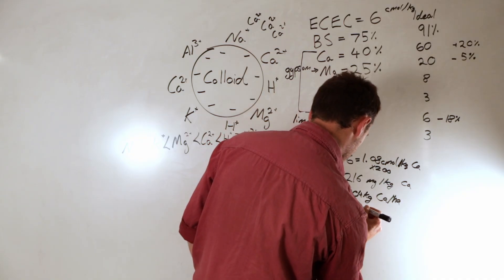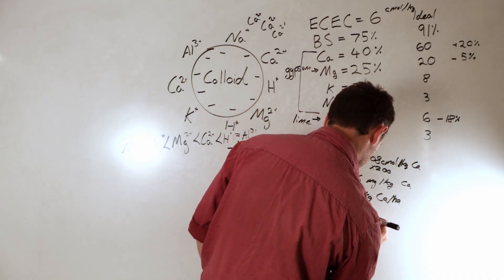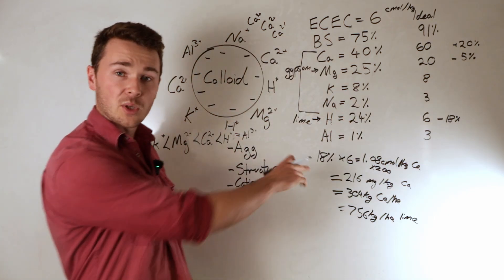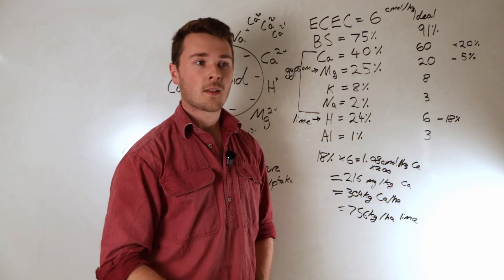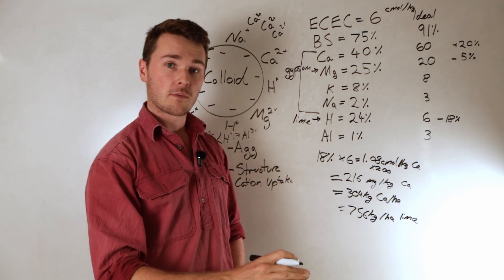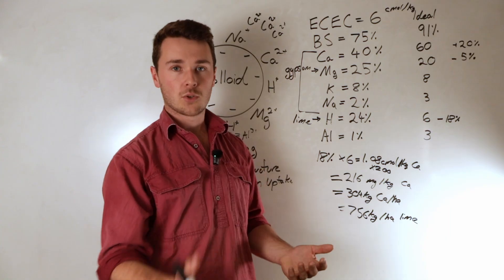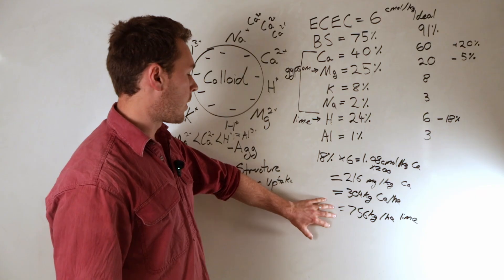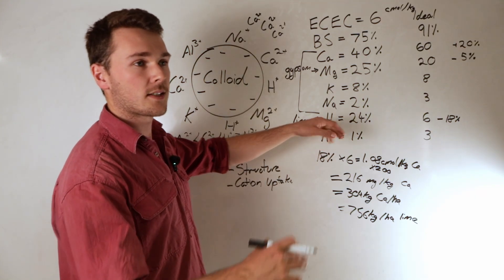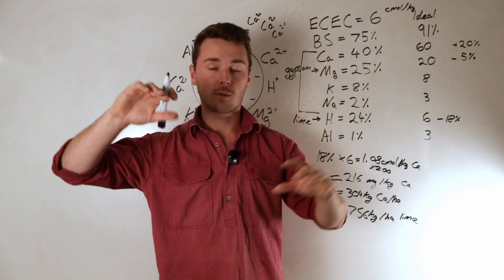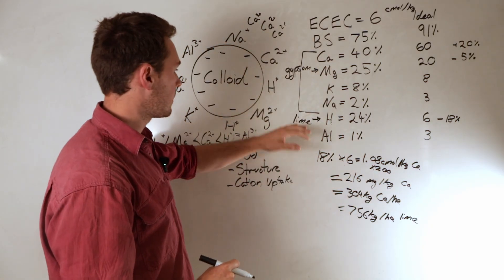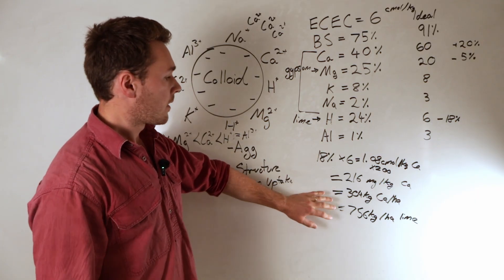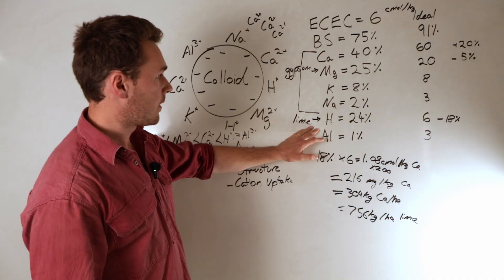So now what we want to do is convert this to an application rate. So if we're going to manage a hectare down to say 10 centimeters with a bulk density of 1.4, effectively we can just times this by 1.4, and that's going to get our 304 kilos of calcium per hectare. Now that's not our liming rate. That's actually how much calcium to supply. So now we've got to divide this by the amount of calcium in lime, which is 40%, and that's going to equal 756 kilos of pure lime per hectare. So that would be the liming rate of pure lime, by the way. So then you need to adjust that for impurities.